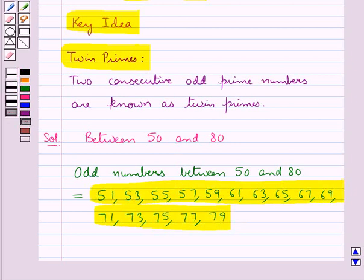To find the pairs of twin primes between 50 and 80, we need to find the two consecutive odd prime numbers from the given odd numbers. As you can see, we have 59 and 61 are the two consecutive odd prime numbers. So one pair would be 59, 61.